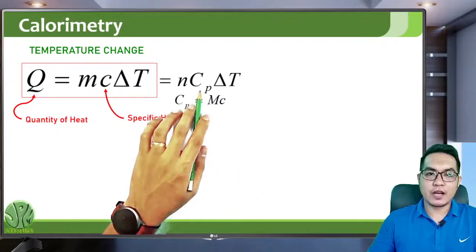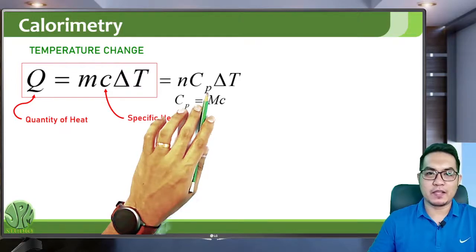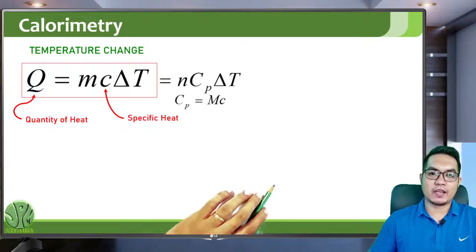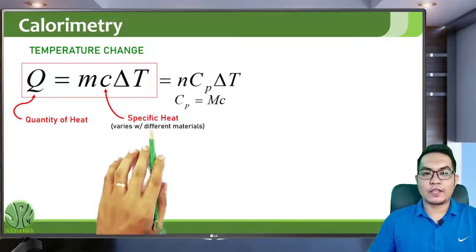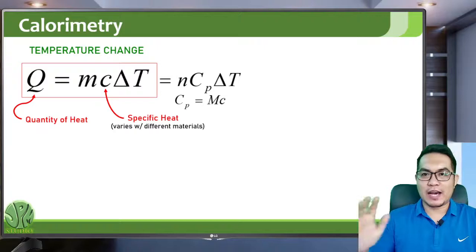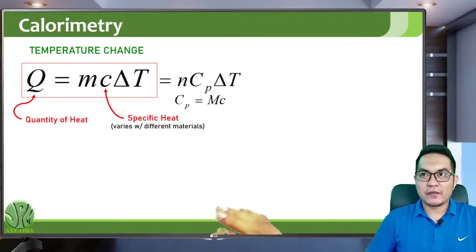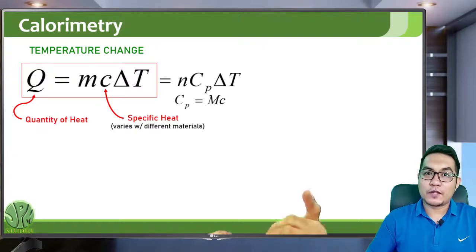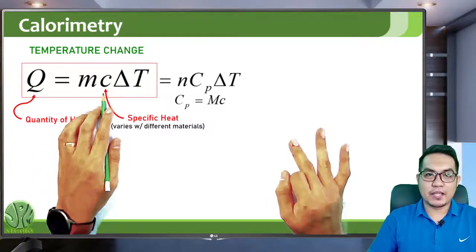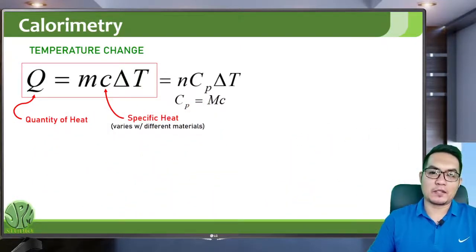The molar heat capacity at constant pressure, cp, is equal to the molar mass times the specific heat. Similar to the coefficients of expansion, the specific heat varies with different materials. A material can have a coefficient of linear expansion, a coefficient of volume expansion, a specific heat, and a molar heat capacity at constant pressure.